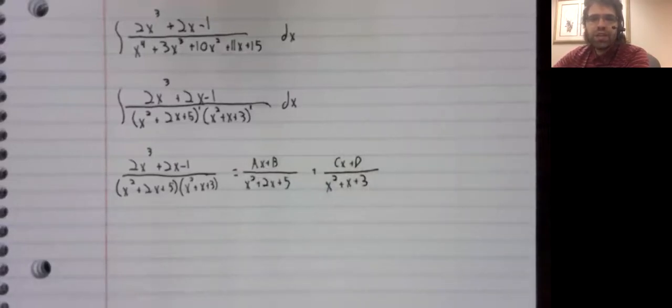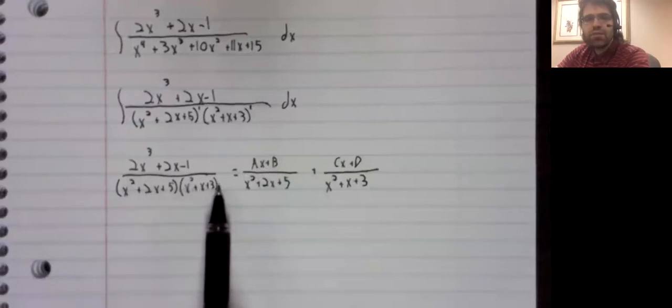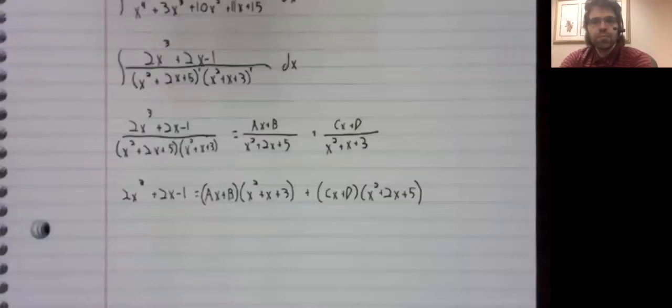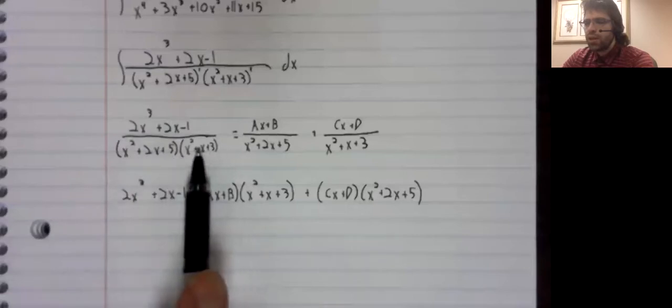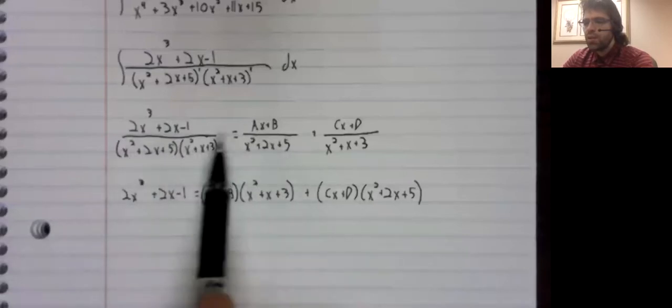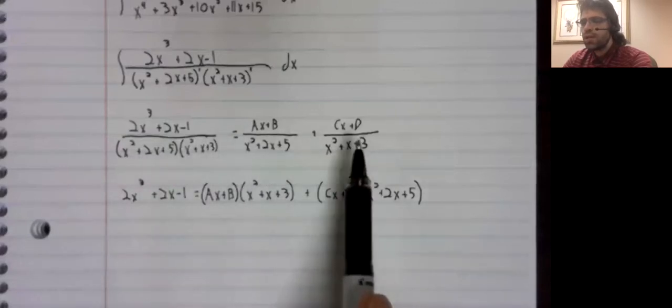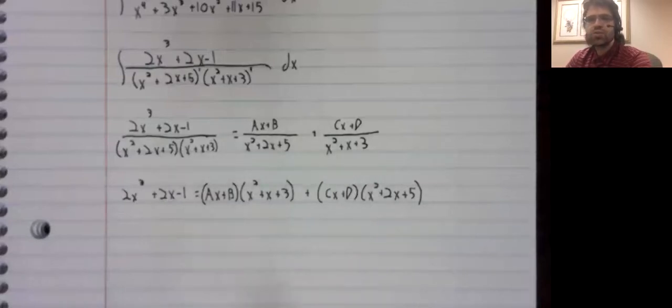And from previous work, it seems like we should probably multiply both sides by this denominator. We do so when we multiply this here, this and this cancel. When we multiply here, this and this cancel.